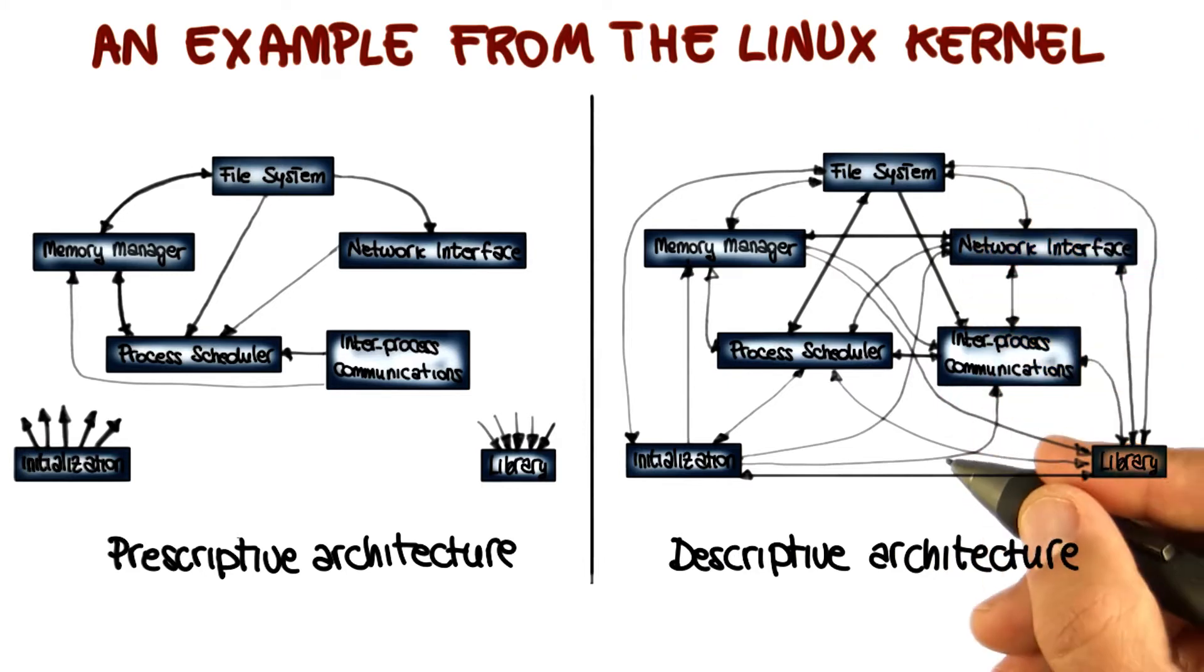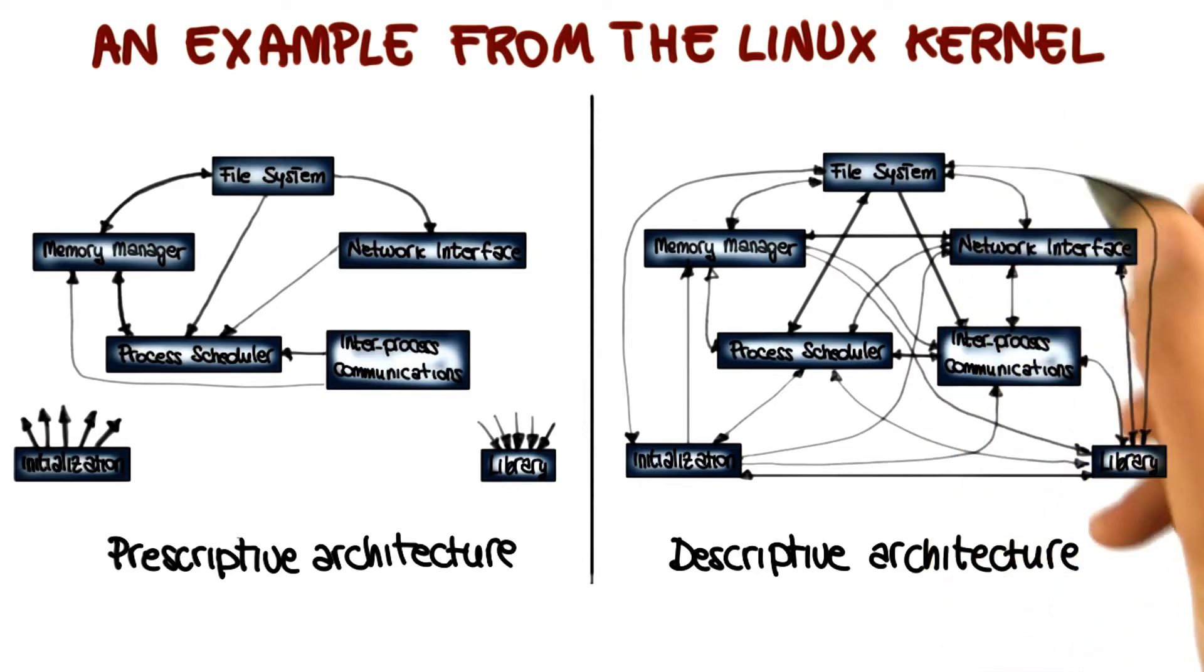In addition to that, there are also several things that don't really make much sense. For example, the library calls the file system and also the network interface, which doesn't make much sense.